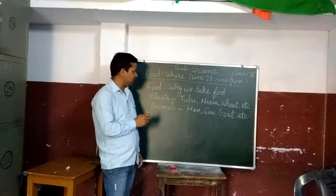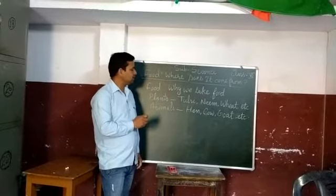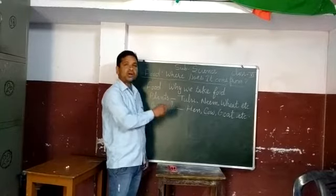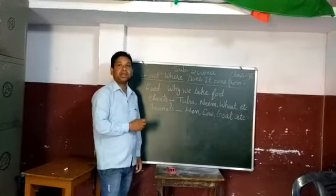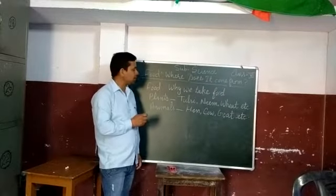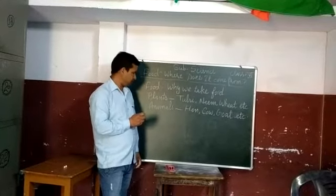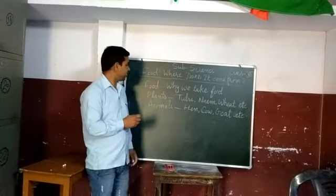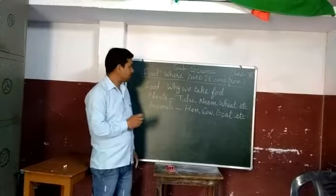Then animals — animals are also a source of food. For example, hen, cow, and others. From animals we get water, meat, and milk. These are the two things: plants and animals.